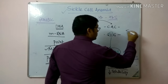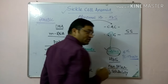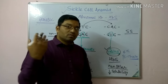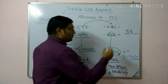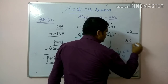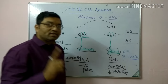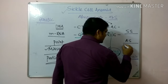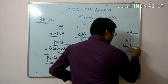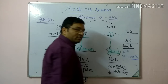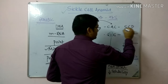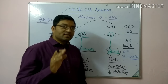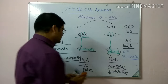There are two main inheritance patterns. The SS pattern is the homozygous state due to inheritance of the abnormal gene from both parents — this is sickle cell disease. The AS pattern results from inheritance of only a single abnormal gene and is known as sickle cell trait or sickle cell carrier.